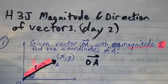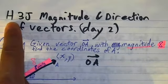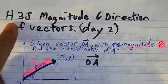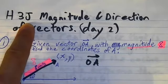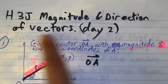Okay, right now I'm going to give the notes for H3J, so high level chapter 3, subsection J, magnitude and direction of vectors.